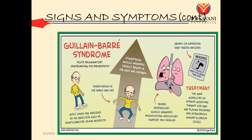Regarding signs and symptoms of AIDP — acute inflammatory demyelinating polyneuropathy: symmetrical muscle weakness usually begins in the legs and ascends. It starts from the feet and moves upwards toward the trunk, and from the hands upward as well. Most cases are preceded by an infection such as enteritis. There are absent or depressed deep tendon reflexes. Severe respiratory muscle weakness may develop, necessitating ventilatory support — one-fourth of patients will need mechanical ventilation because of respiratory failure.